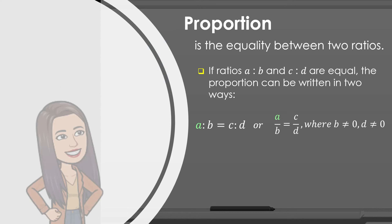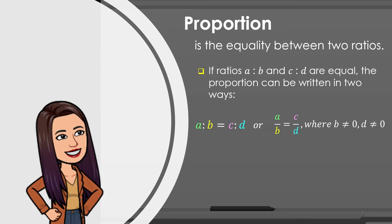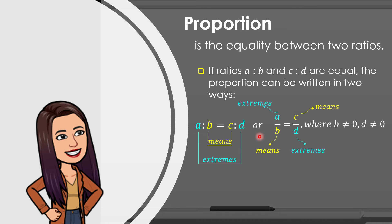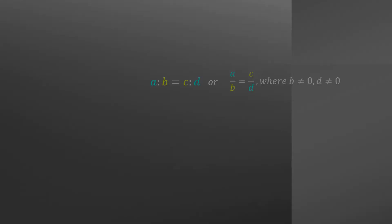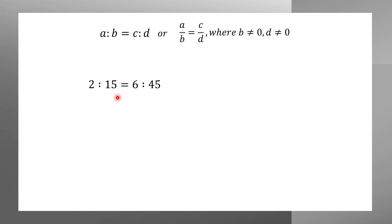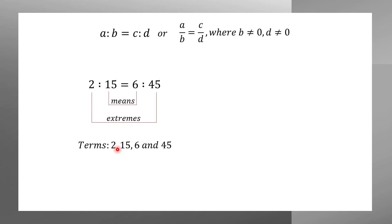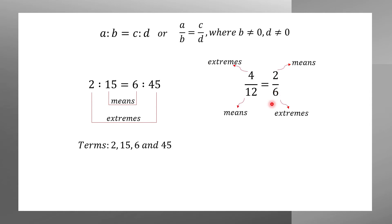Each quantity in a proportion is called a term, so we have a, b, c, and d as the terms of our proportion. B and c are the means, while a and d are the extremes. For example, 15 and 6 are the means, while 2 and 45 are the extremes, and the terms are 2, 15, 6, and 45. Another example: 4 over 12 is equal to 2 over 6, in which 12 and 2 are the means, and 4 and 6 are the extremes.